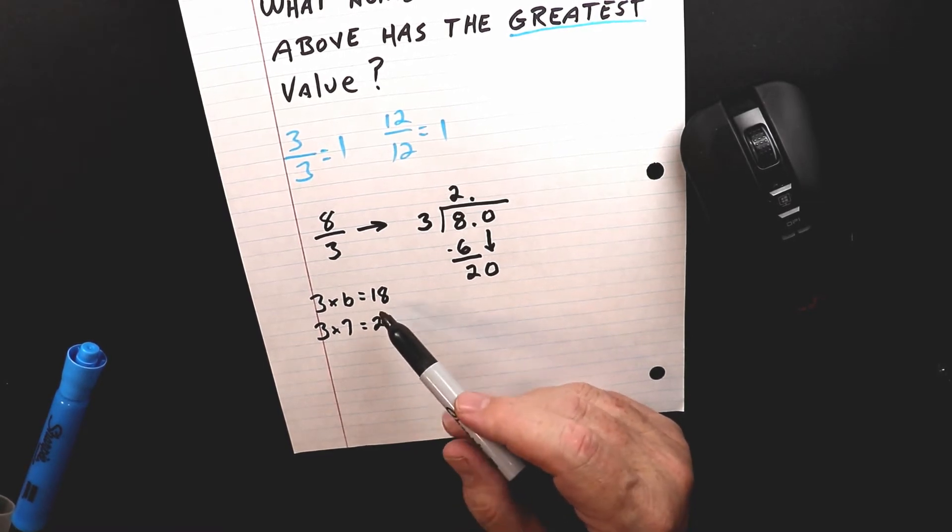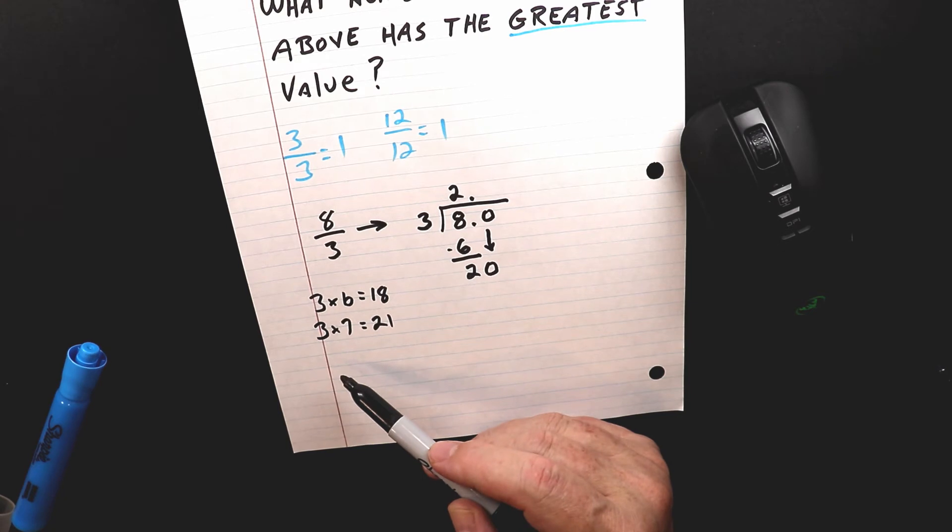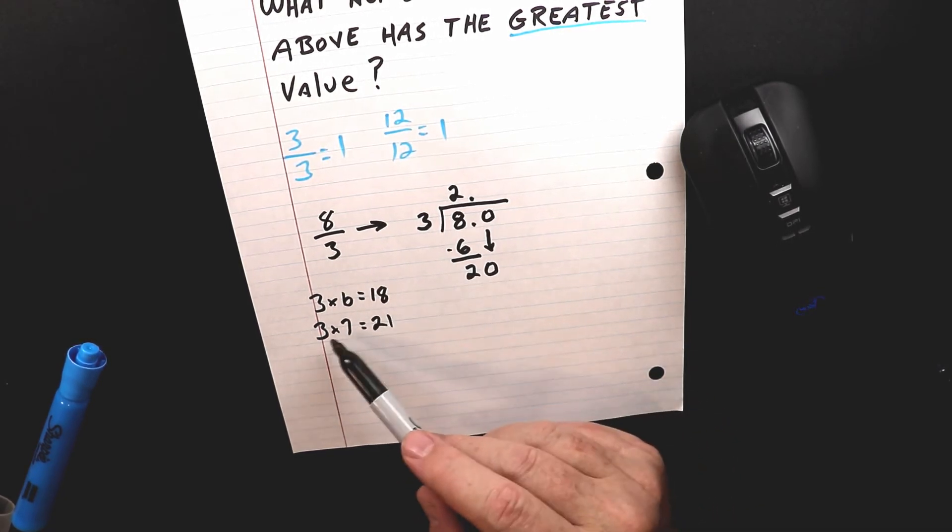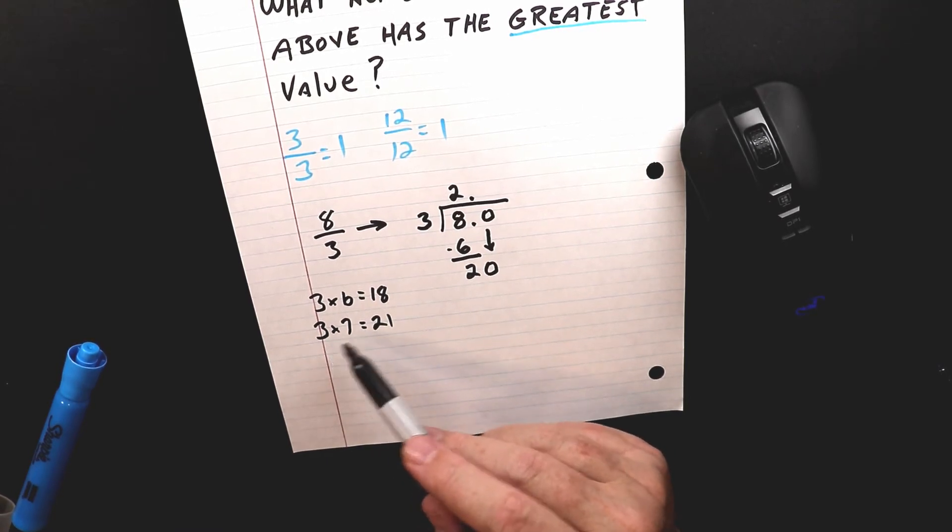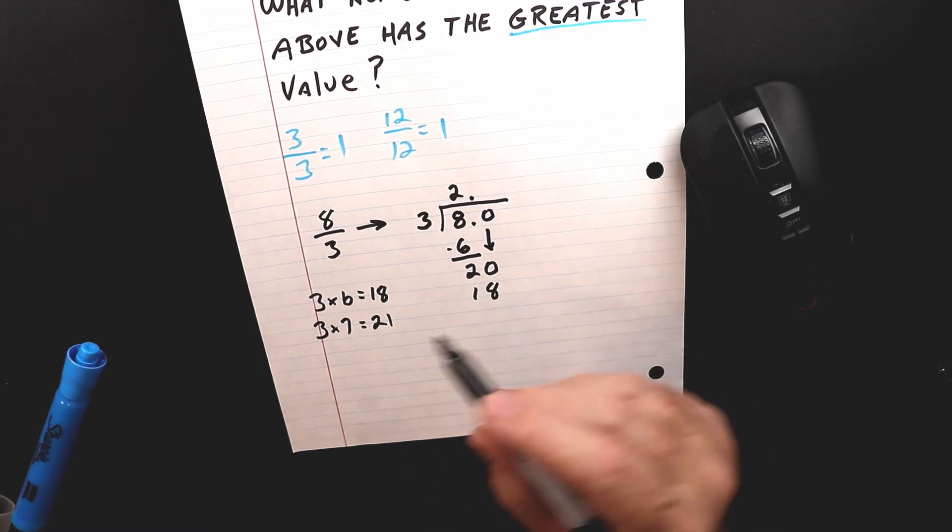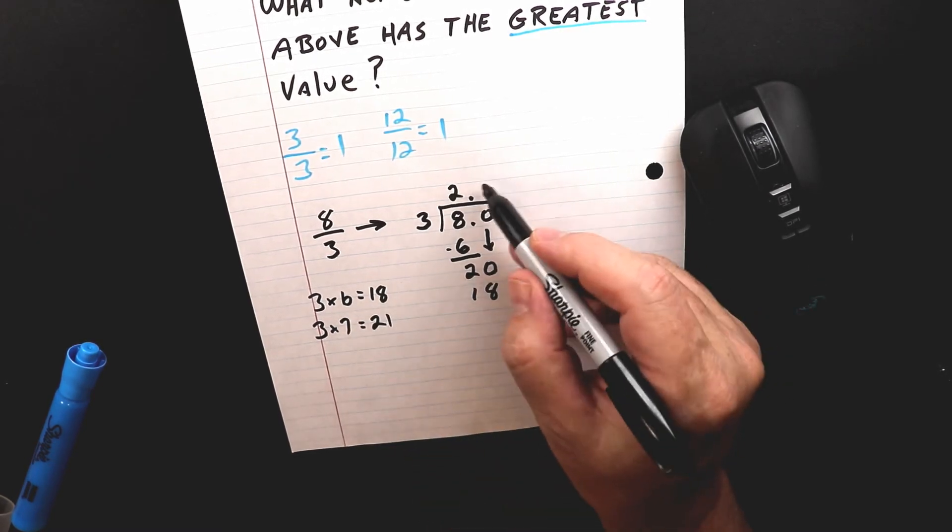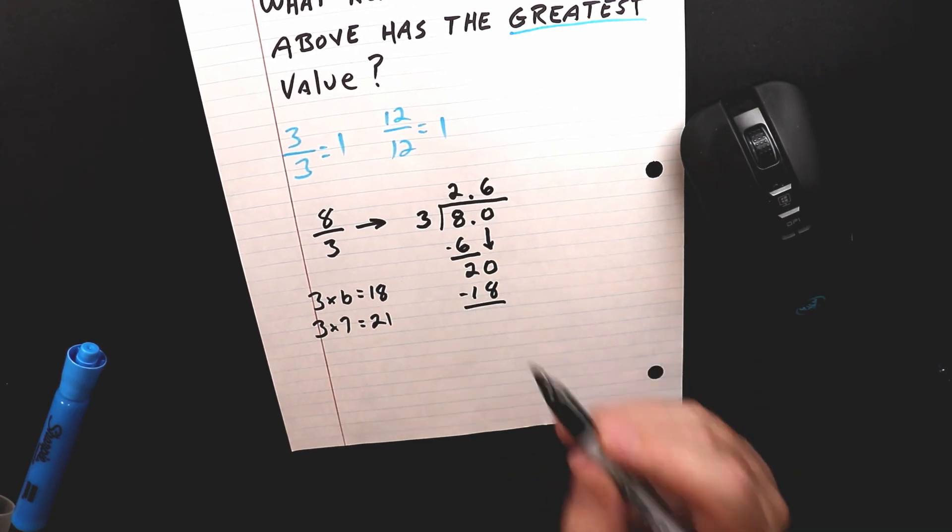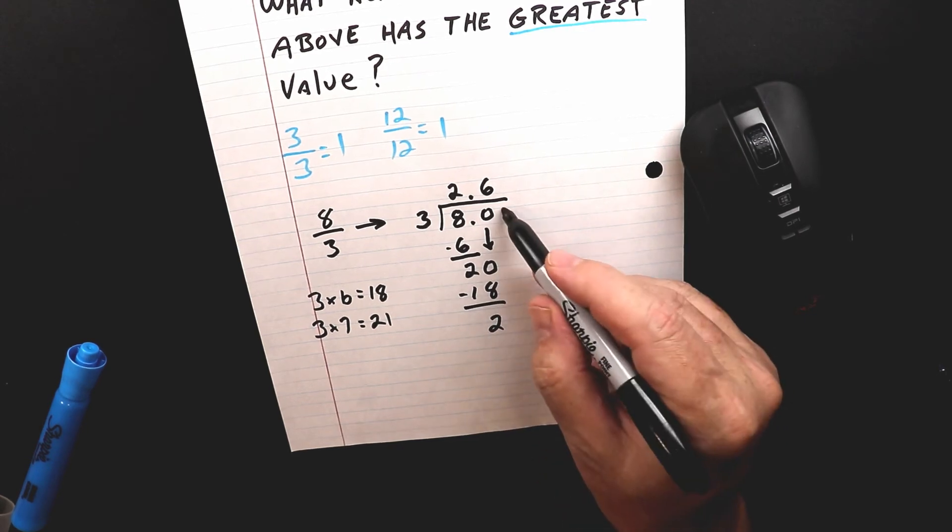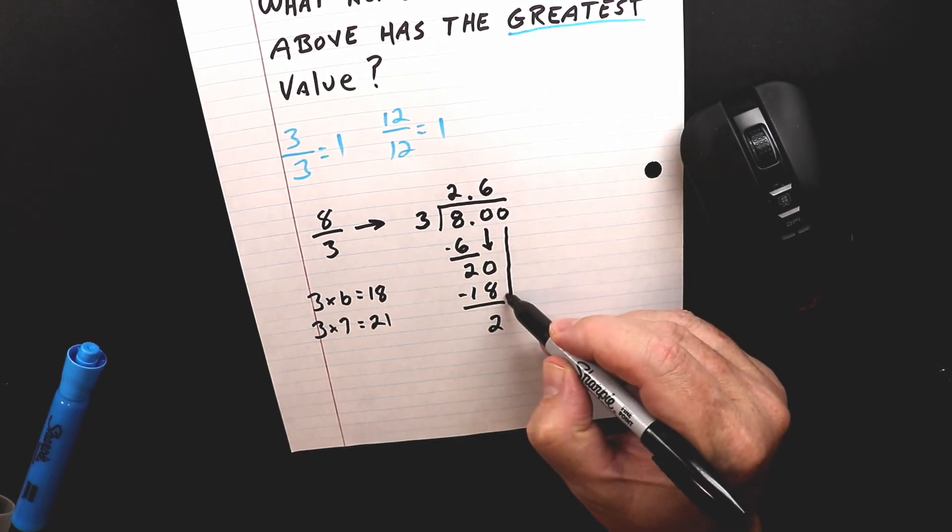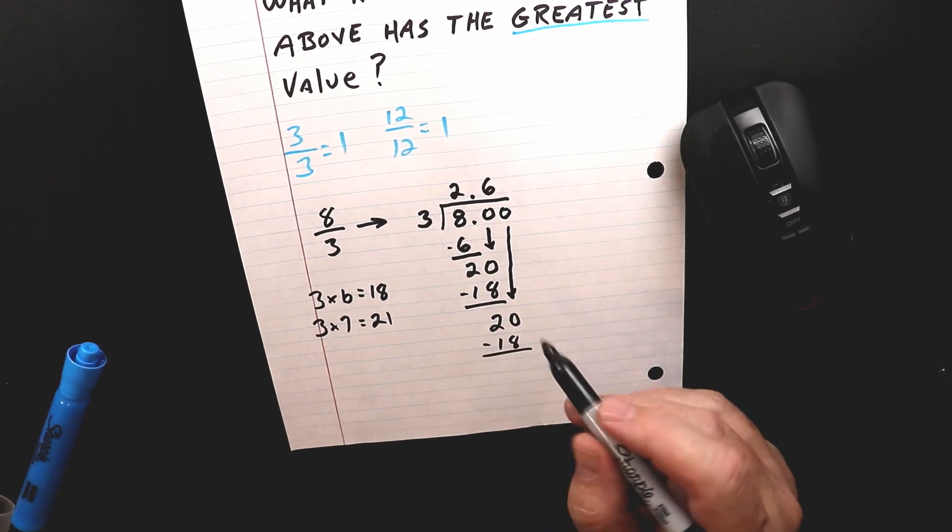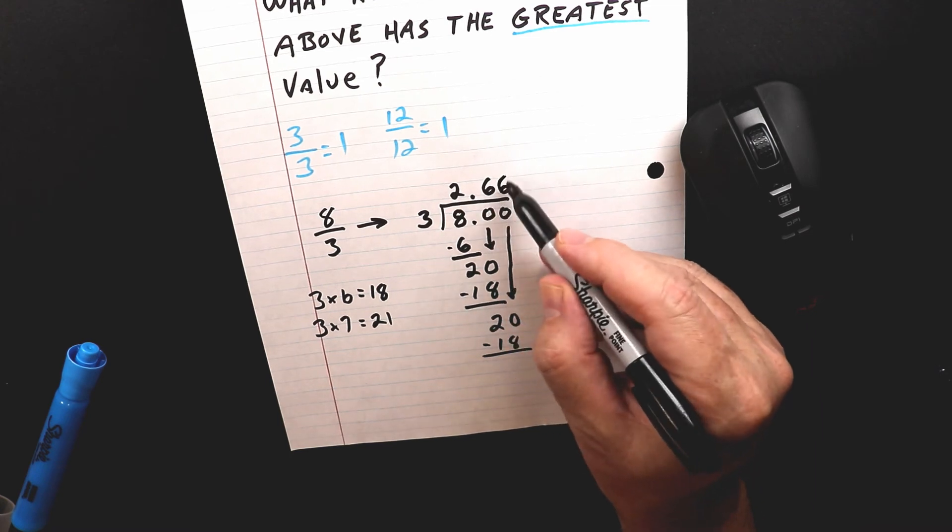You should have memorized that. But worst case you just set up a multiplication table down the side. You know, 3 times 1, 3 times 2, 3 times 3. But if you can memorize your multiplication tables you're just going to save so much time. So 3 times 6 is 18. I have to remember to take this 6 and put it up there. 20 minus 18 is 2. And I got the same number again which means it's just going to repeat. So it's going to be 3.66 repeating.